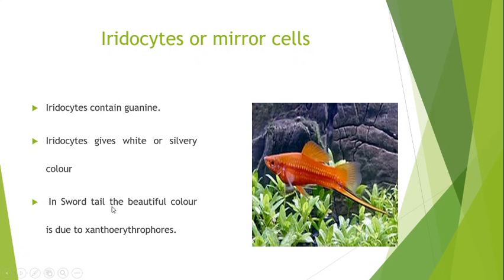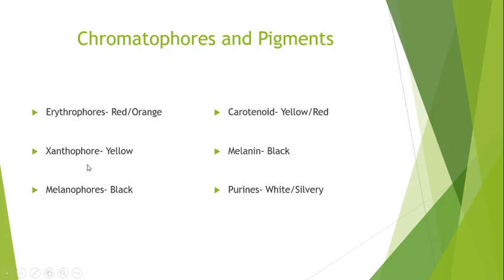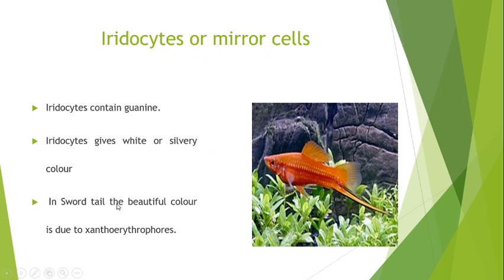We can see that in Swordtail, that is Xiphophorus helleri, the beautiful color is due to the presence of xantho-erythrophores. This is a combination of xanthophore and erythrophore. The beautiful coloration is due to the presence of xantho-erythrophores which contain yellow pigment in the center of the cell and the red pigment in the processes of the cell. So it contains both yellow and red pigments. The red granules consist of an outer limiting membrane and inner lamellae. This is a beautiful fish with beautiful coloring pattern due to xantho-erythrophores.